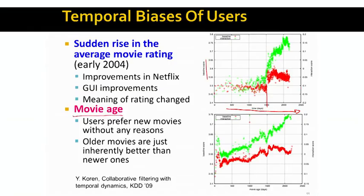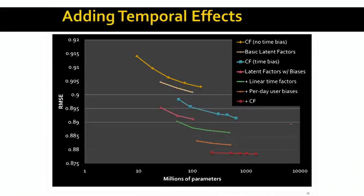Another thing we also see is, for example, that the movies age well. In a sense that as time goes on, the movies get higher and higher ratings. In a sense that older movies get rated higher as time goes on.